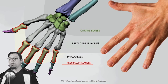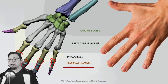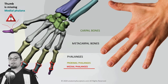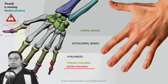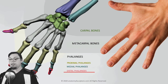Finally, the phalanges: there is a proximal phalanx, a medial phalanx, and a distal phalanx. Note that the thumb is missing the medial phalanx — every finger has three phalanges, but the thumb has only two, because it is missing the medial phalanx.